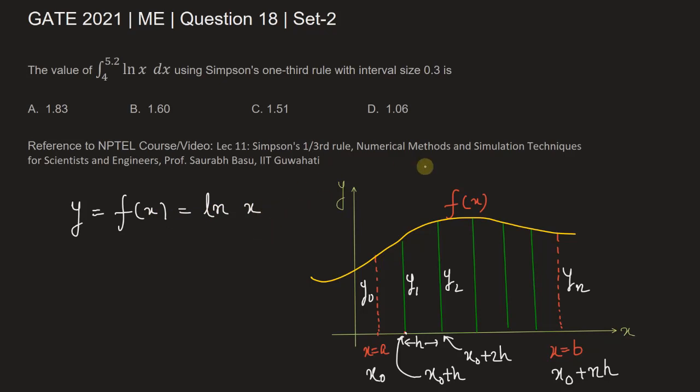Coming back to our problem, y equals f(x) is given as natural logarithm of x. a, the lower limit or initial value of x, is 4. b, the final value or upper limit, is 5.2. Also, the interval size h is given as 0.3.